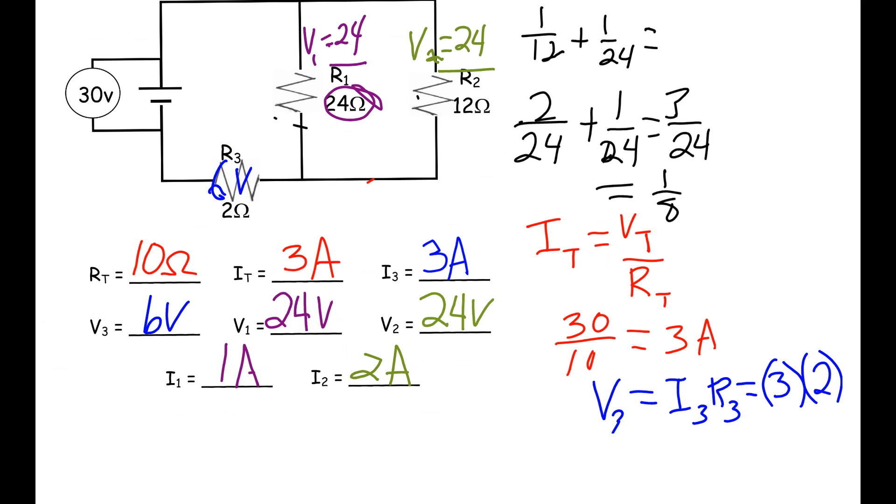And to double-check ourselves, we're going to find that I1, which is 1, plus I2, which is 2, is equal to I3, which is 3. And that is how we solve this problem.